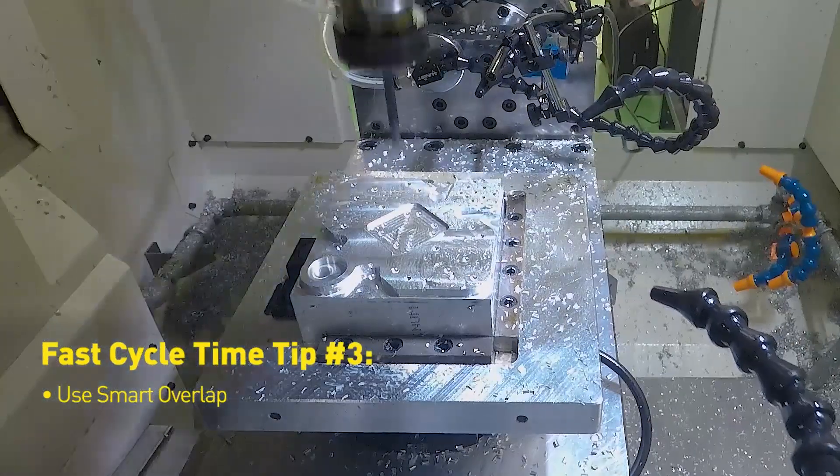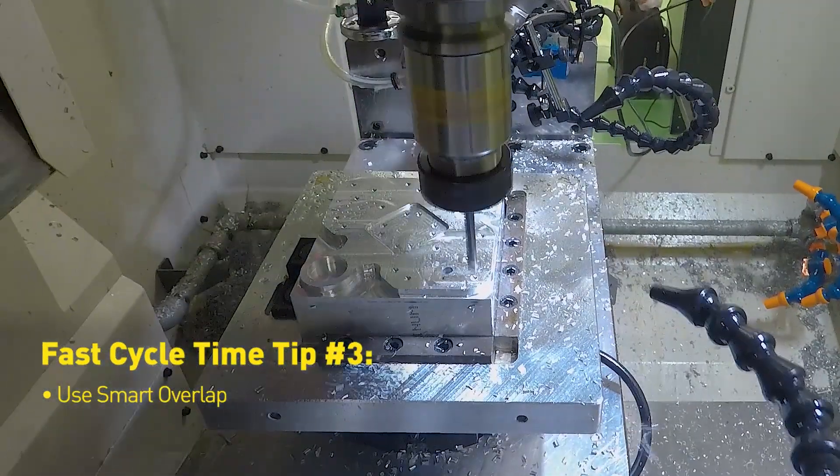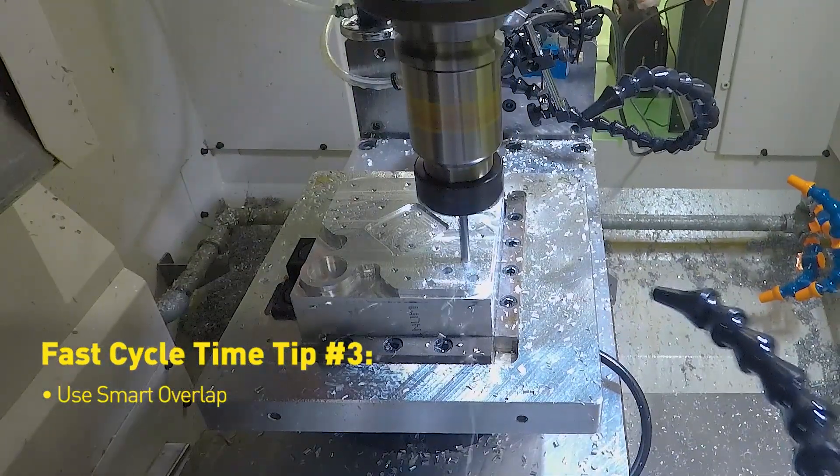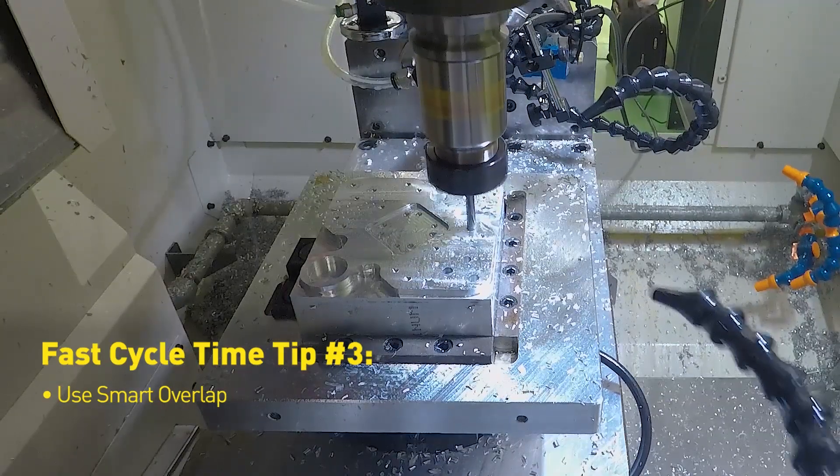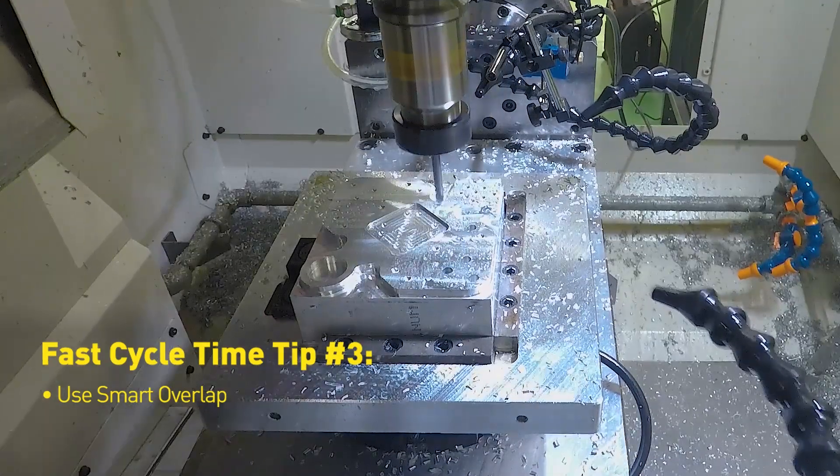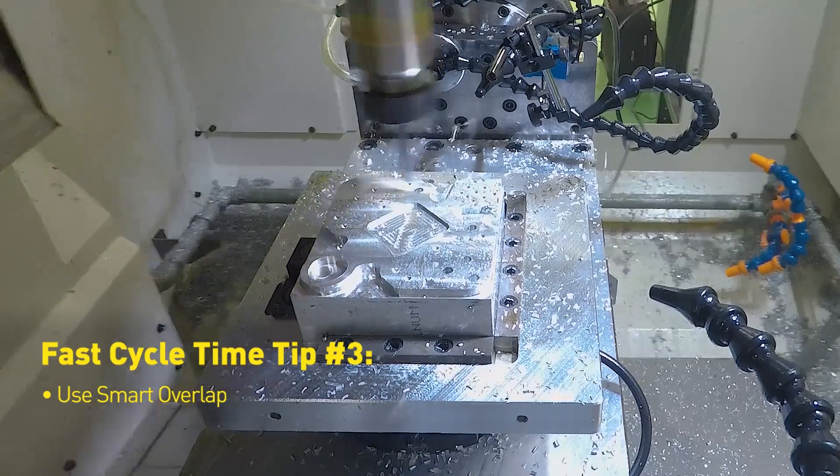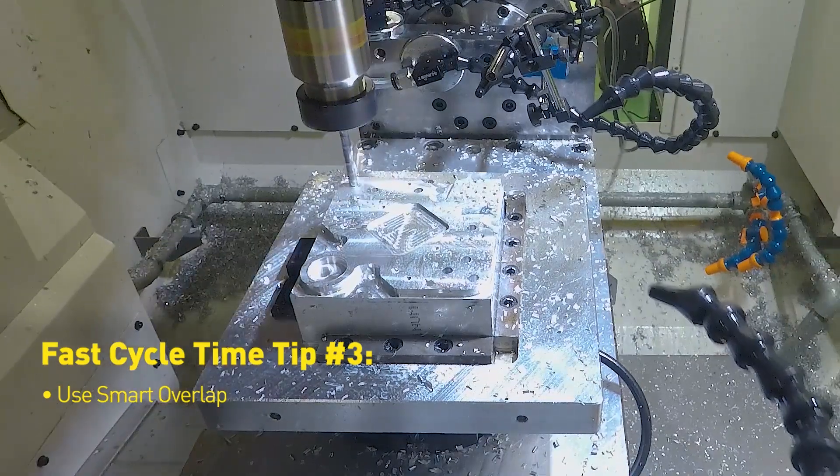Smart overlap with rapid traverse block overlap allows the CNC to blend positioning to positioning blocks and positioning to cutting blocks together to reduce cycle time when motion accuracy is not required.